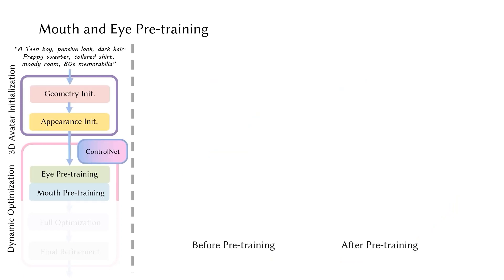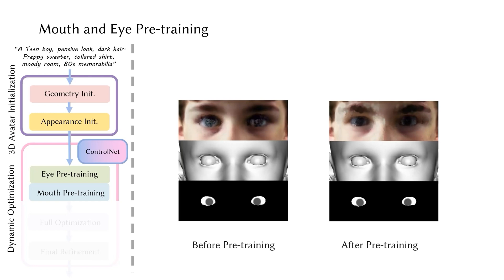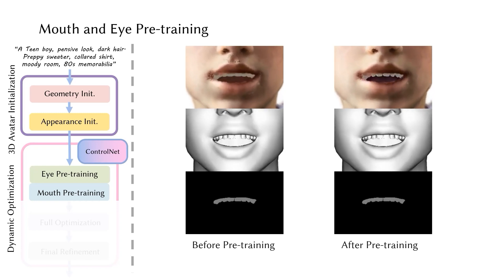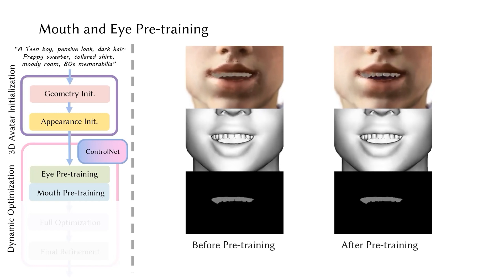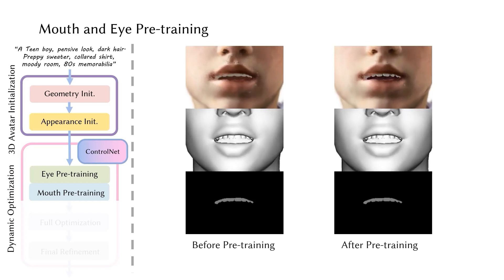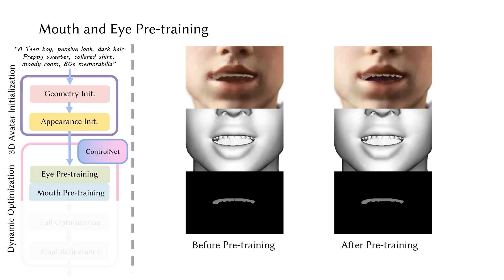Here we present zoomed-in views of the eye region before and after pre-training. After pre-training, issues of inaccurate rigging in the eye region are significantly reduced. In the mouth region, the color of the interior mouth is improved. At this stage, the primary goal is to enhance rigging accuracy. While the overall appearance still lacks full realism, it will be refined in subsequent steps.